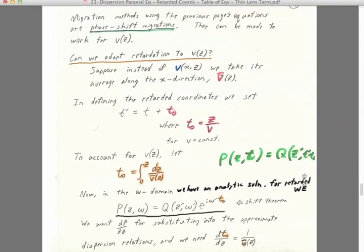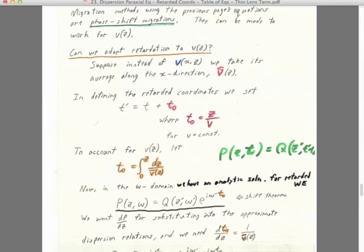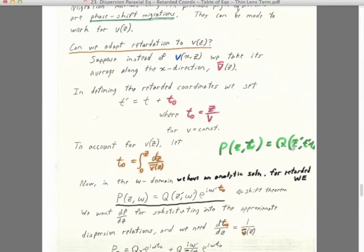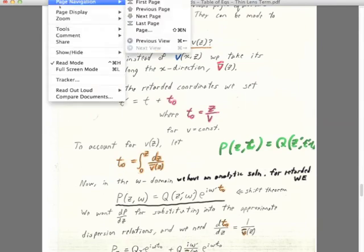Migration methods using this table of equations can be called phase shift migrations. And they also can be made to work for velocity as a function of z.